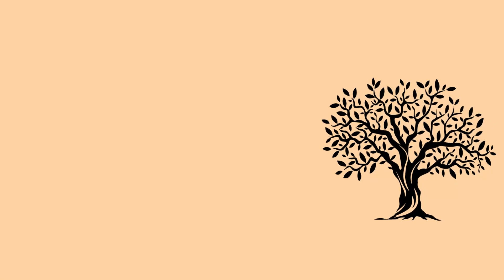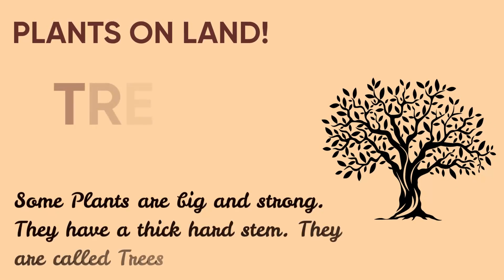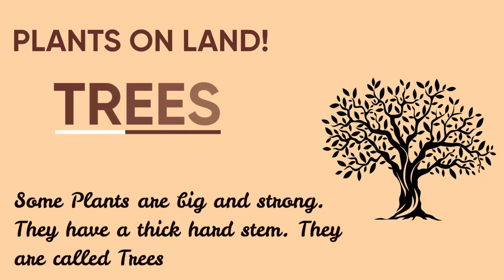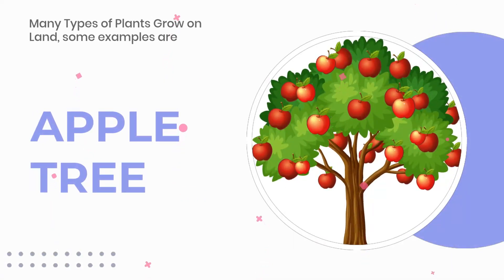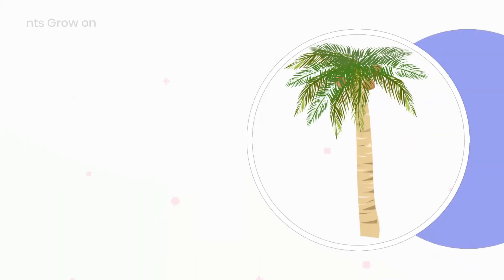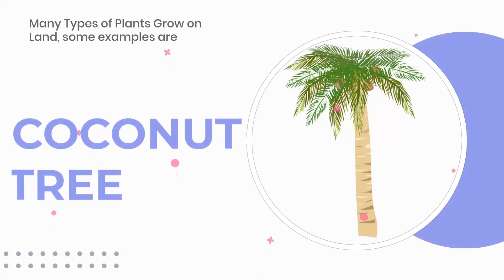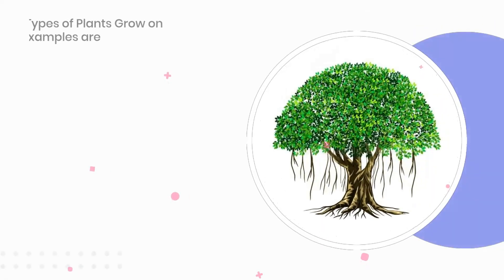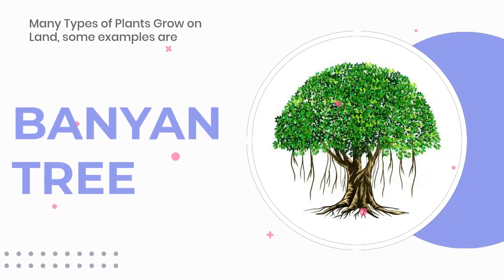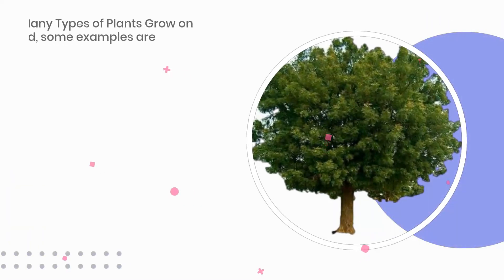Let's talk about plants that grow on land. Some plants that grow on land are big and strong. They have a thick hard stem. They are called trees. Some examples are apple tree, coconut tree, banyan tree, neem tree.